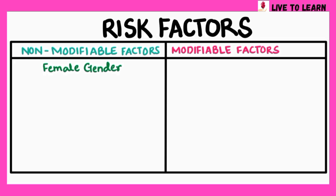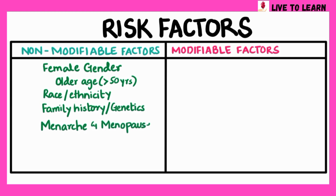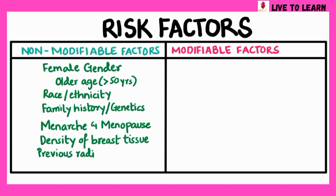Other non-modifiable risk factors include older age, usually above 50 years, race or ethnicity, family history and genetics, menarche and menopause, the density of the breast tissue, previous radiation therapy, and a previous history of breast cancer.